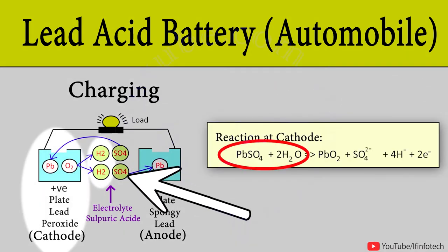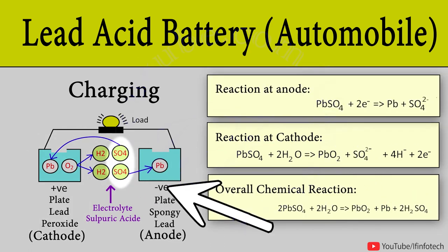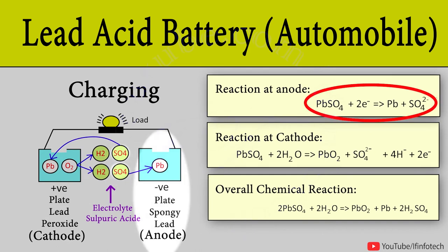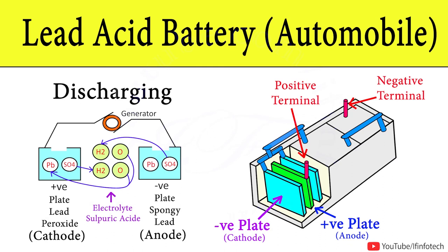On the other hand, sulfide ion exchanges electrons with anode and becomes radical sulfide ion. This sulfide ion reacts with lead sulfide of anode and creates lead peroxide and sulfuric acid. The following chemical reaction takes place at anode and cathode during charging process.